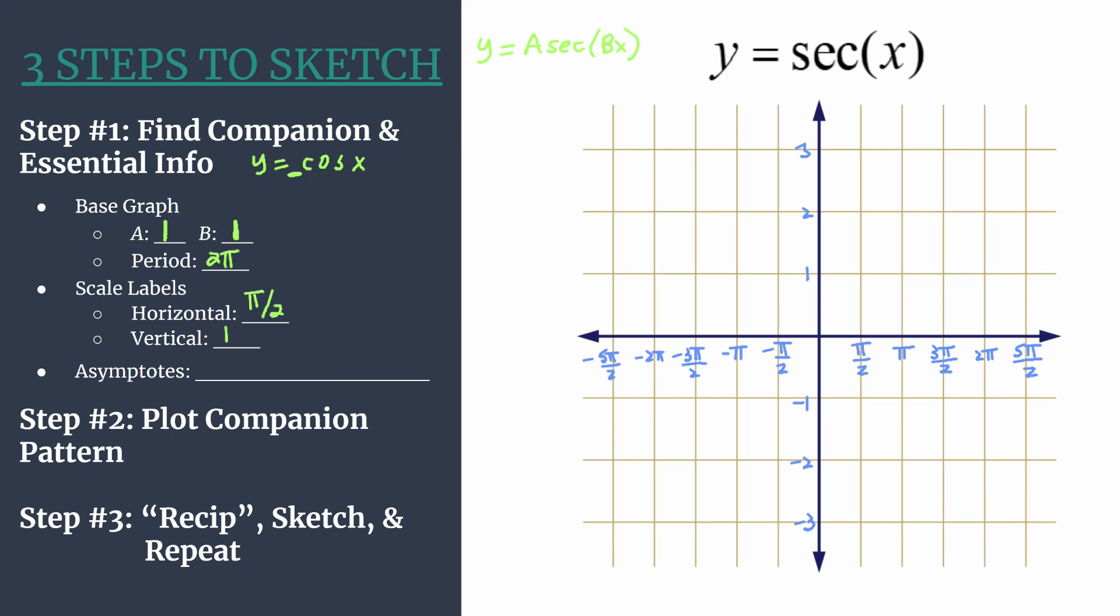Now the last bit of information we want to gather before we get into the actual graphing is to find the asymptotes equation. And we're going to do this for our secant graph. So it's very easy to do this as long as you remember you're looking for the places, the values of x, where your secant is undefined.